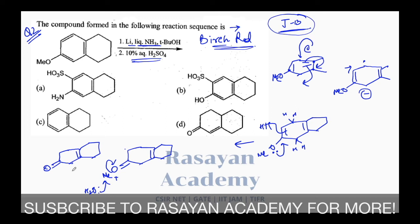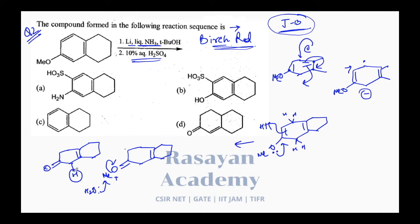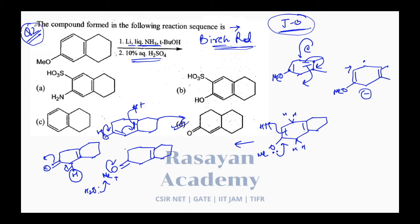This is not an alpha-beta unsaturated ketone system — this is a gamma-delta system. But in the presence of acid, since this proton is on an acidic position it is easily lost. You get an enol-type intermediate, and in the presence of acid isomerization takes place, which leads to product D. The correct answer for question 2 is D: Birch reduction followed by hydrolysis of the vinyl methyl ether.